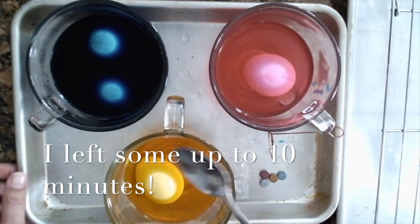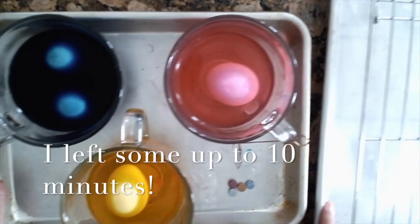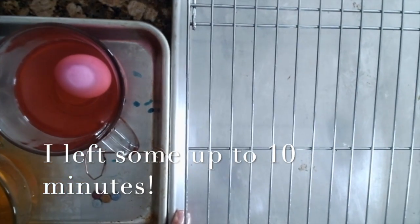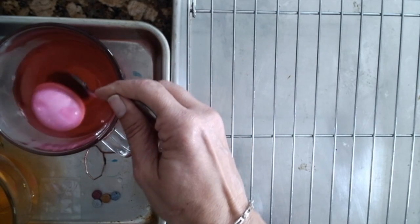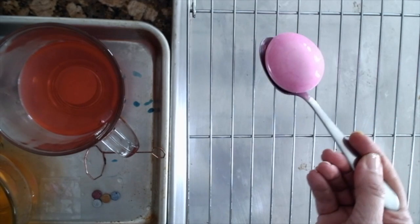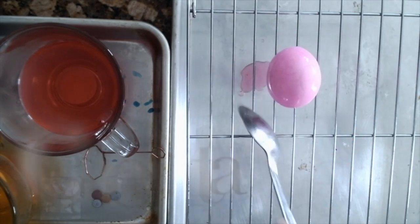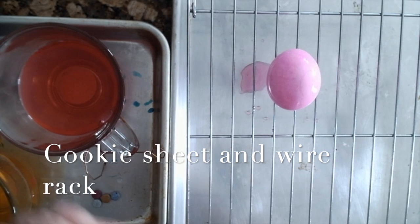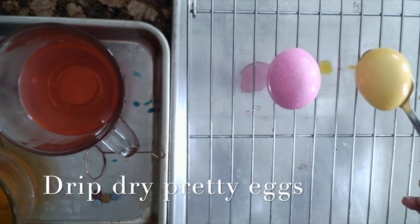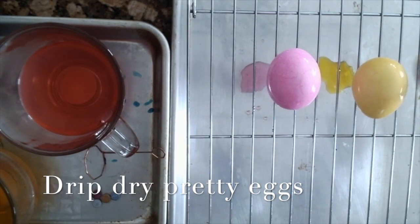Leave them in as long as you'd like to get your color. Then what I did was set up a tray—I took another cookie sheet, this is my cooling rack for my cookies, and it'd be great just to put my egg on that to drip dry. There's my pink one—that one came out pretty. Yellow also very nice.